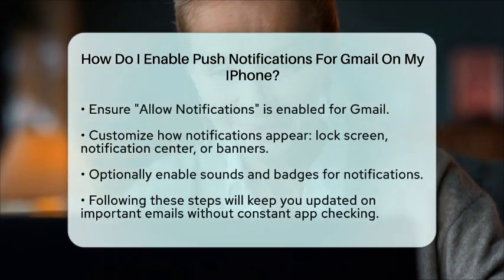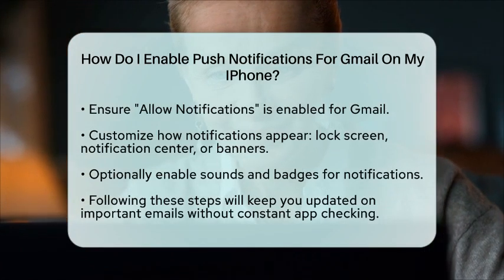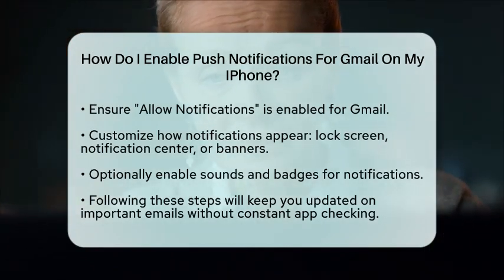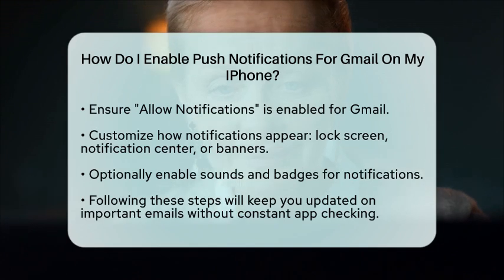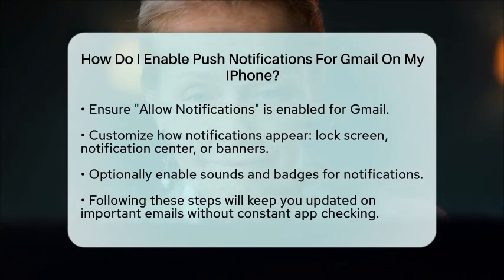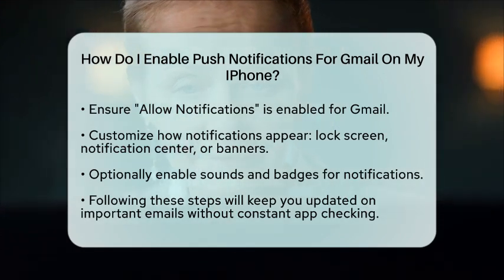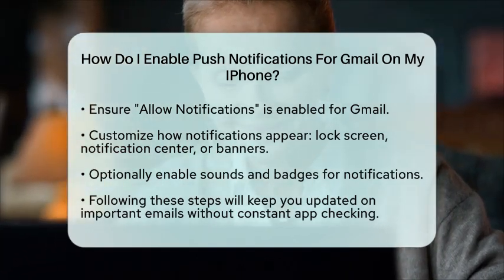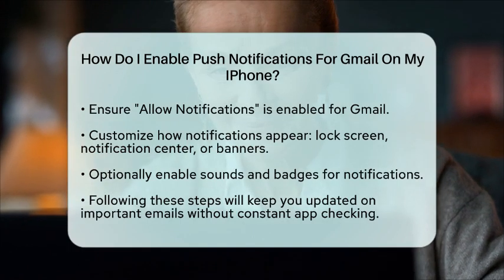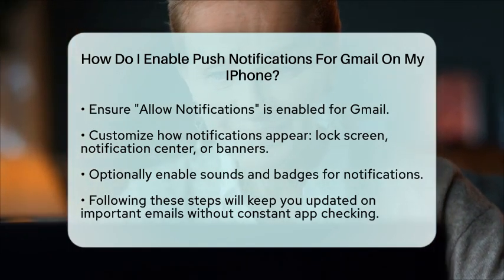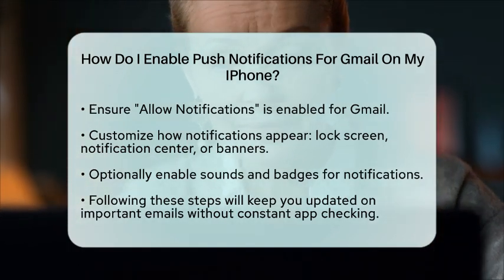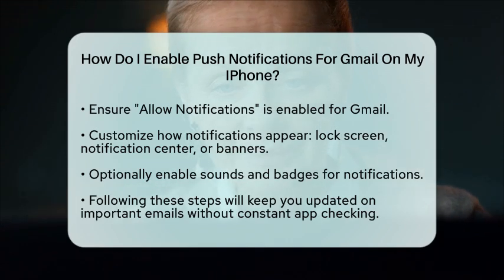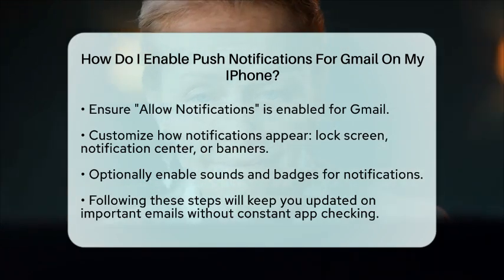Additionally, you can enable sounds and badges for notifications, which will help you notice when a new email arrives. Using the Gmail application is the simplest way to ensure you receive push notifications for new emails. This setup allows you to stay connected with your Gmail inbox without having to check the app constantly. By following these steps, you will be all set to receive timely alerts for your important emails right on your iPhone.